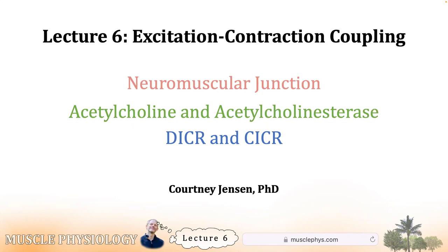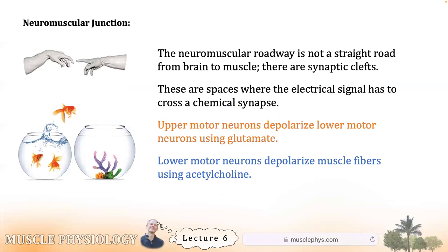As a reminder from the last lecture: upper motor neurons activate lower neurons with glutamate, and lower motor neurons depolarize muscle fibers using acetylcholine. The connection between lower motor neurons and muscle fibers is where we'll pick up today.